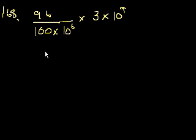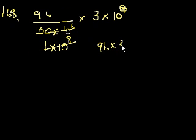So if we simplify this a little bit, 100 times 10 to the 6th is the same thing as 1 times 10 to the 8th. If you have a 10 to the 9th in a denominator divided by 10 to the 8th, this cancels out and you're just left with a 10. So the denominator becomes 1, and the numerator becomes 96 times 30.